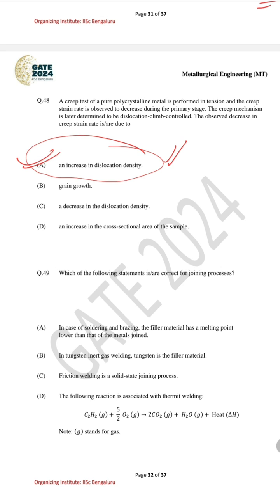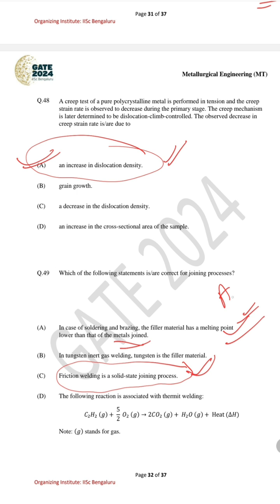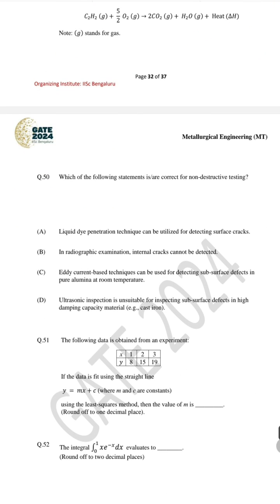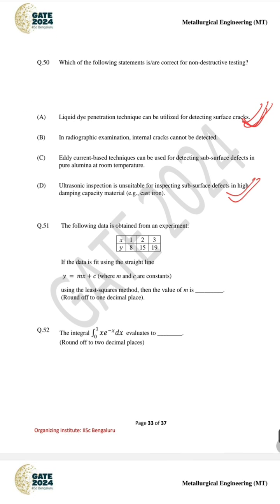For question number 49 the correct answers are A and C: in soldering and brazing the filler material has a melting point lower than that of the base metal, and friction welding is a solid-state process. For question number 50, an MSQ on non-destructive testing, the correct answers are A and D: liquid penetrant inspection can detect surface cracks, and ultrasonic inspection is unsuitable for inspecting subsurface defects in high damping capacity materials.